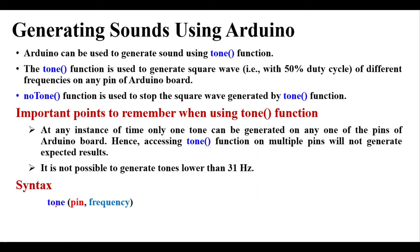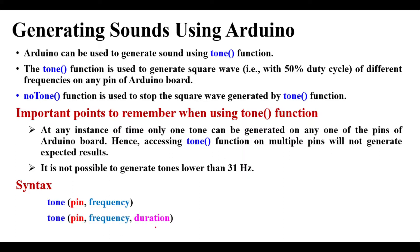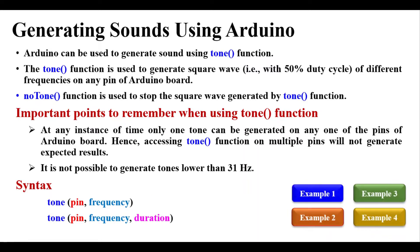To use the tone function we have to pass at least two arguments: the pin on which we want to generate the tone, and the frequency of the square wave. Another way is to use three arguments: the pin number, the frequency, and additionally the duration for which the tone will be played — the duration is written in milliseconds. This covers the basics of the tone function, and we will now explore these with examples.